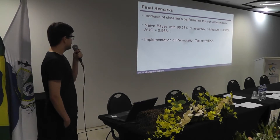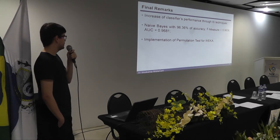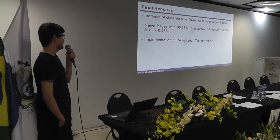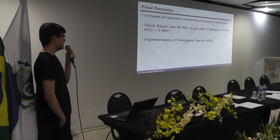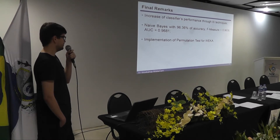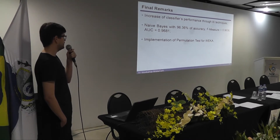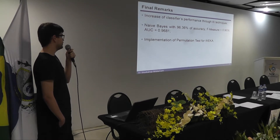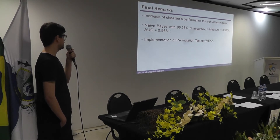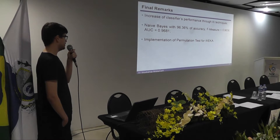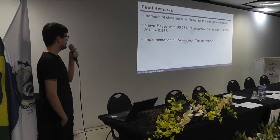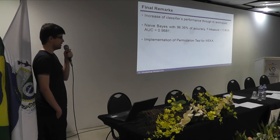For the final remarks: we got an increase in classifier performance through AI techniques. The best result was obtained with the Naive Bayes algorithm, achieving 96.36% accuracy — a huge increase. F-measure equals 0.9636 and area under the ROC curve equals 0.9681. We also made a permutation test implementation for Weka, because it does not have this possibility, in order to validate the significance of the results.